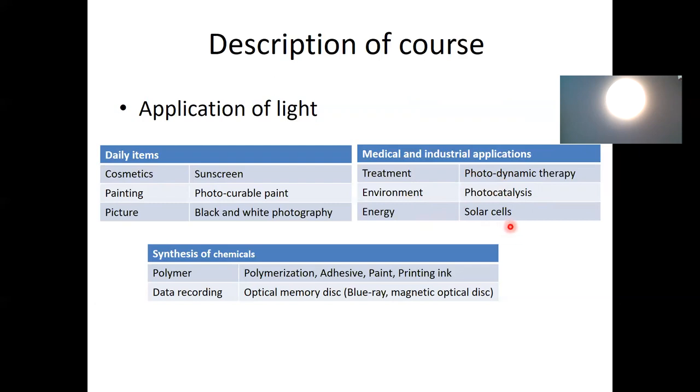And then in the energy area, obviously solar cells are frequently used for energy generation to take the electricity. And then there's synthesis of chemicals. And again, in the polymer formation, you need a polymerization reaction where the radical species are generated by light and adhesive paint printing ink. There are many photo induced chemical reactions are used.